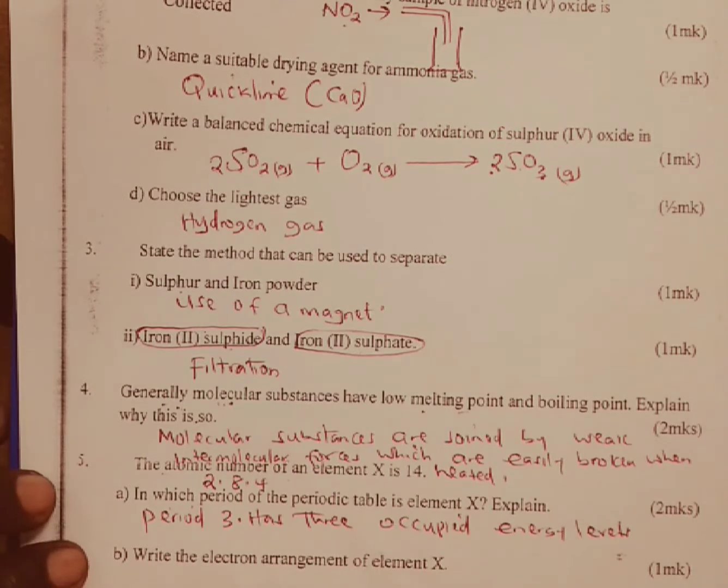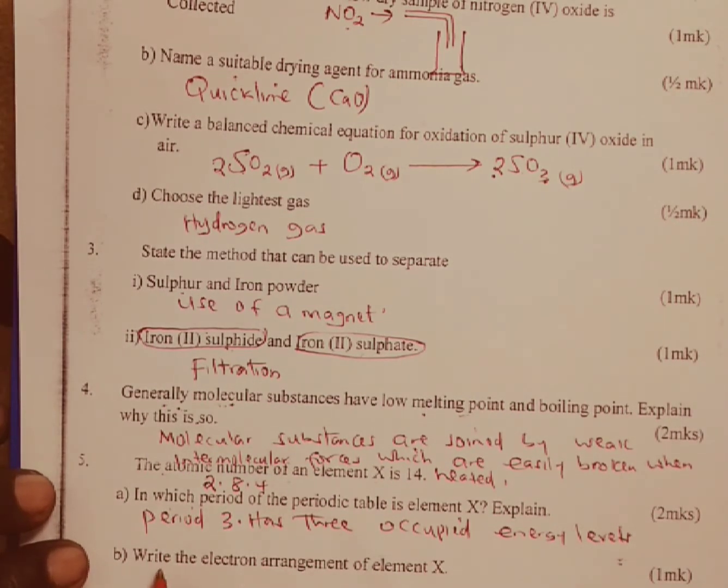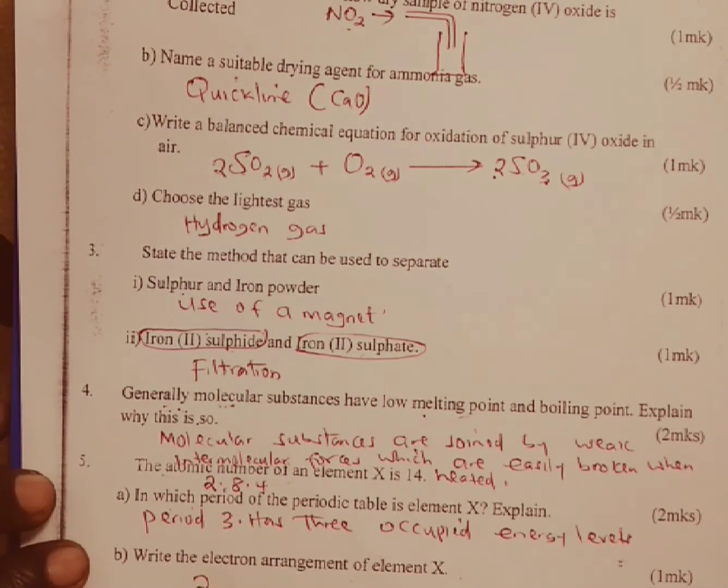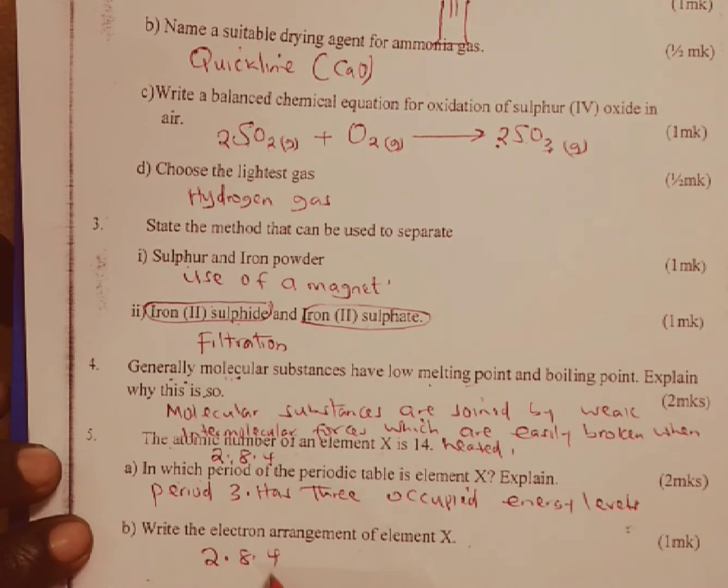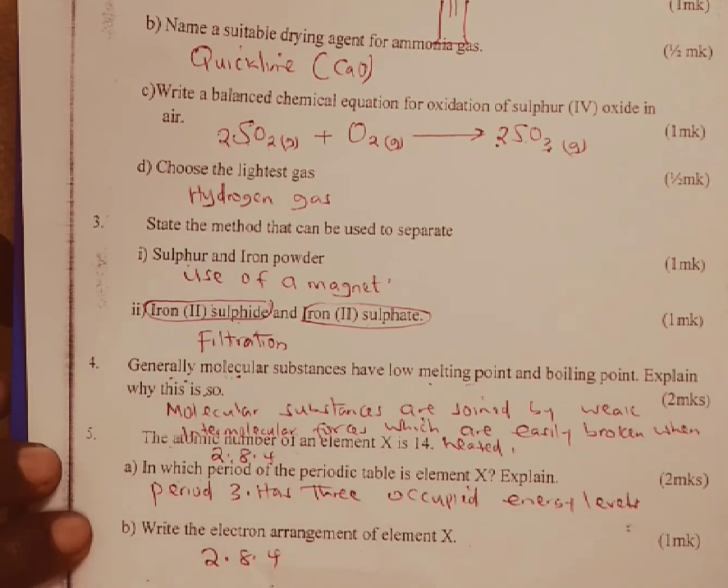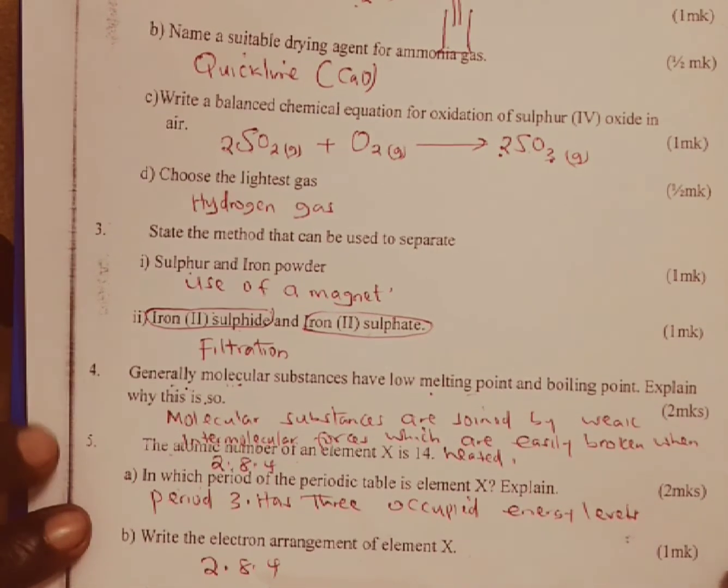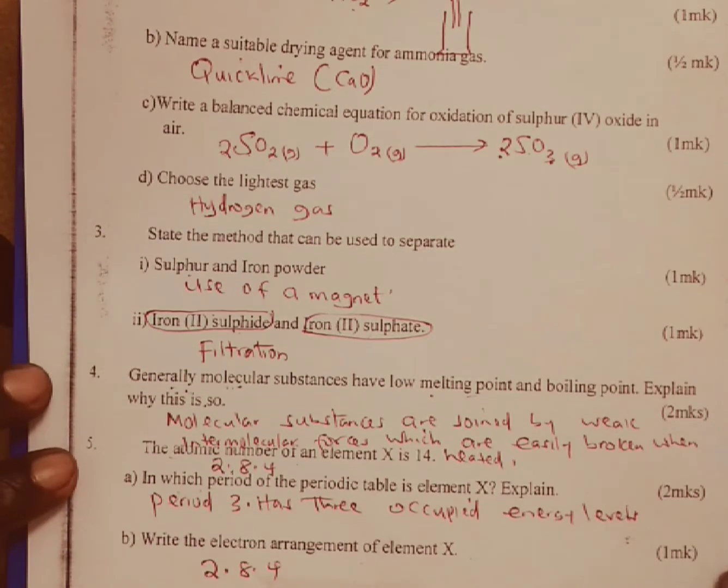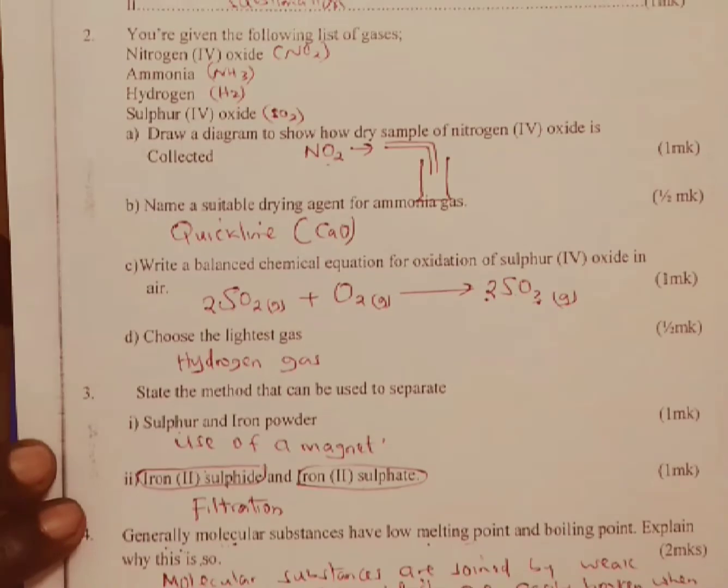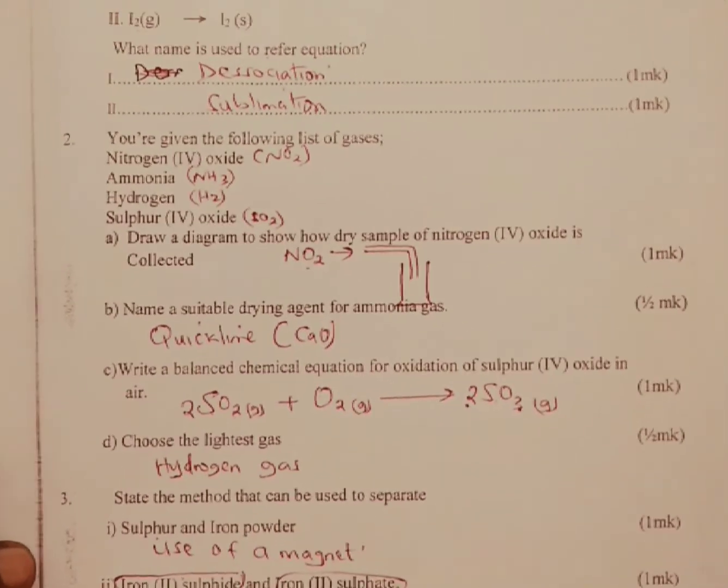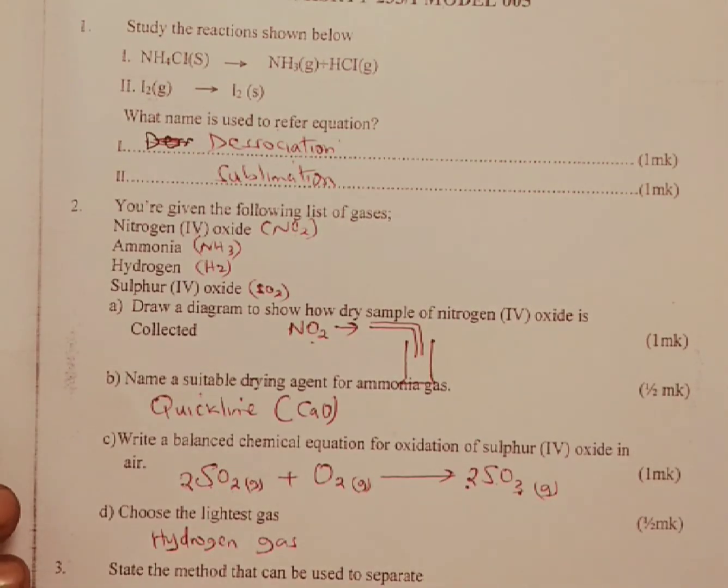Part B of this question says write the electron arrangement of element X. We have already done it here, so we are going to have 2, 8, 4. Thank you for watching once again and welcome to this channel.